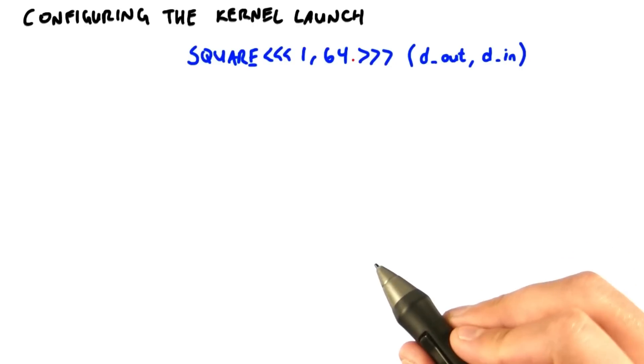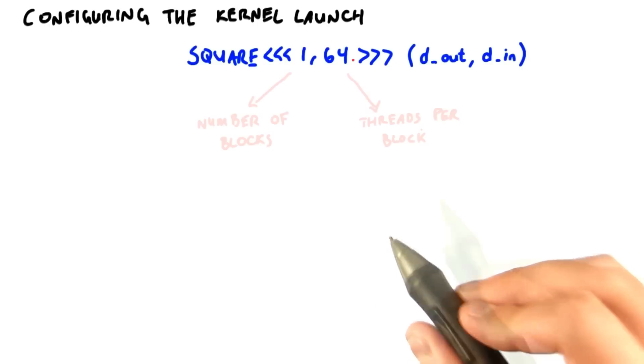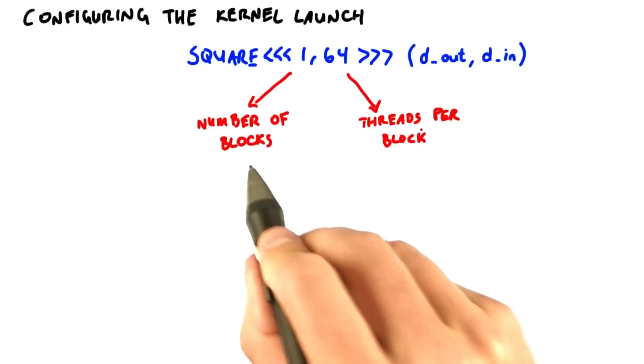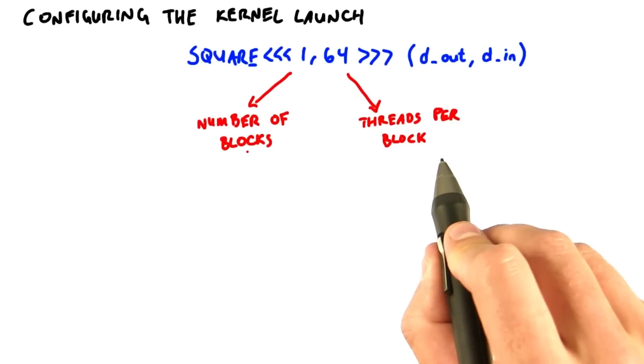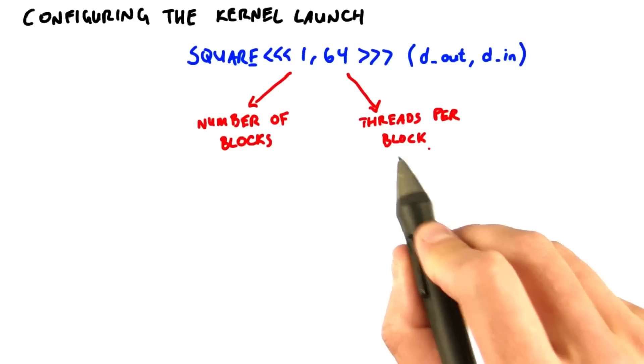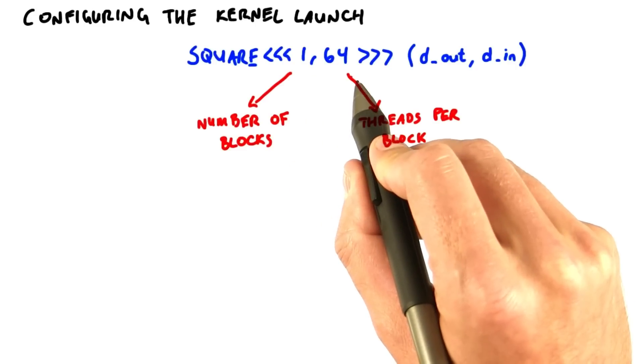But let me explain what's happening under the hood in a little more detail. When you launch a kernel, you specify both the number of blocks and the number of threads per block. In our example, we only had one block of 64 threads.